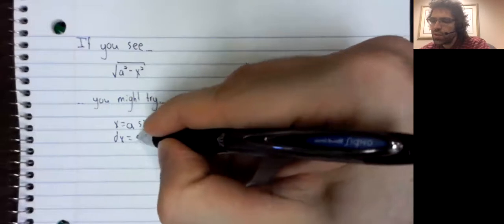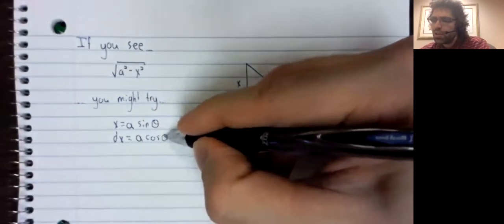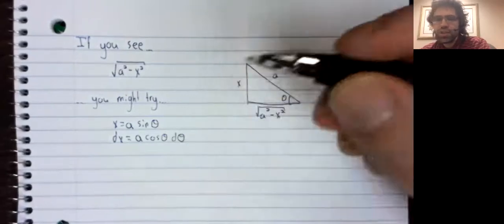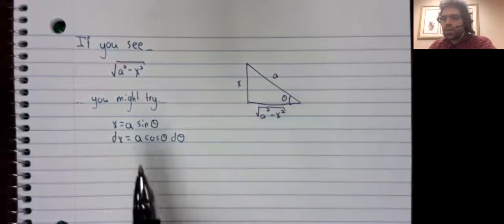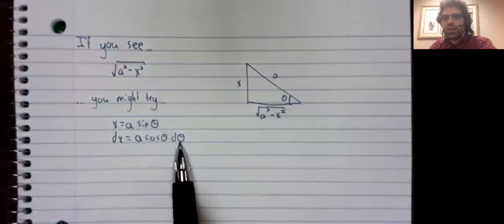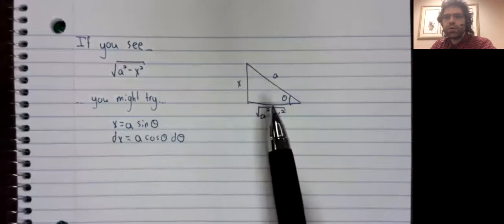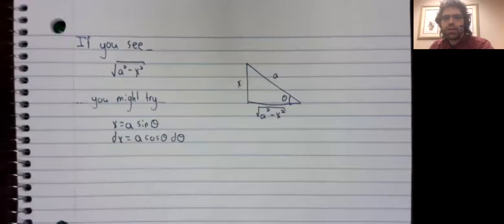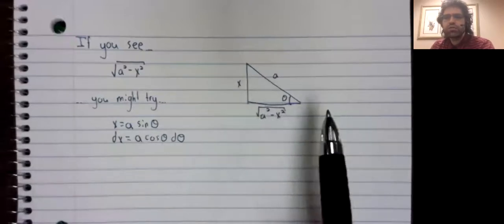dx equals that number times the cosine theta d theta, and you might try rewriting the integral in terms of theta and d theta. The picture you have in the back of your mind here is this: we're getting all of this by looking at this right triangle.